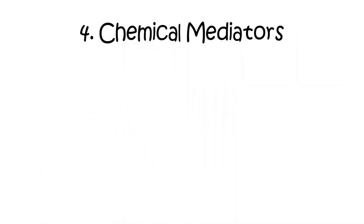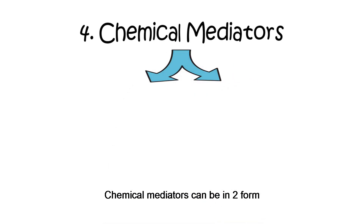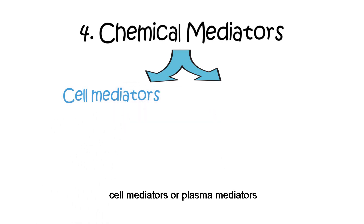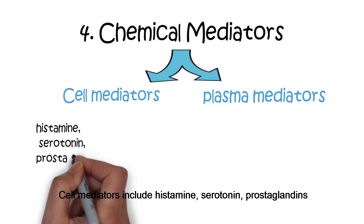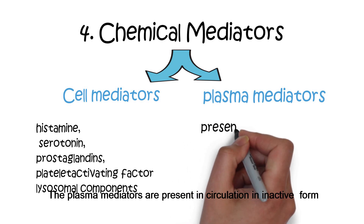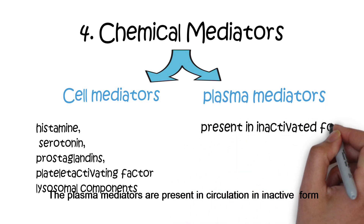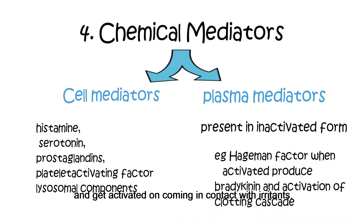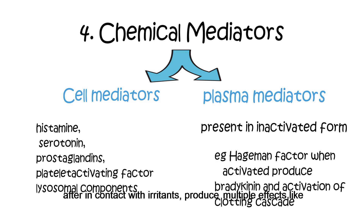The other two factors are theoretical. The first is the effect of chemical mediators, which can be in the form of cell mediators or plasma mediators. Cell mediators include histamine, serotonin, prostaglandin, platelet activating factor, and lysosomal components, which may lead to pain. Plasma mediators are present in circulation in inactive form and get activated on contact with irritants. For example, Hageman factor, when activated by irritants, produces multiple effects like production of bradykinin and activation of the clotting cascade, which may cause vascular leakage.